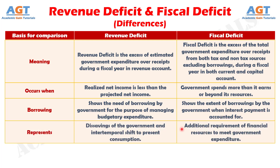Number 4: Revenue deficit signifies that spending of the government is beyond its limit to carry out day-to-day operations. It indicates the savings of the government and intertemporally, a shift to present consumption, whereas a fiscal deficit denotes additional requirements of financial resources to meet government expenditure.